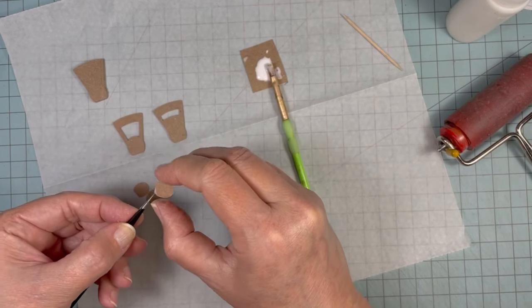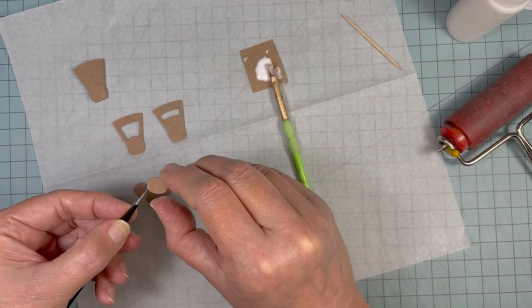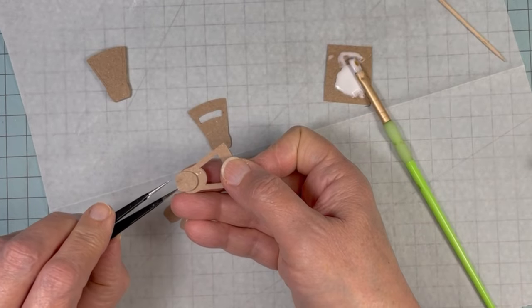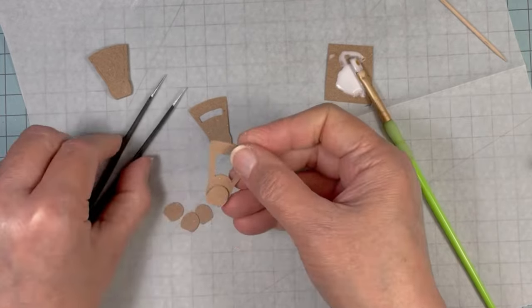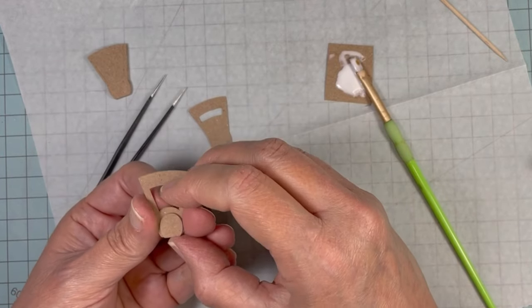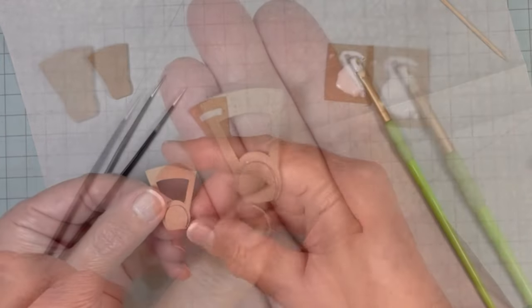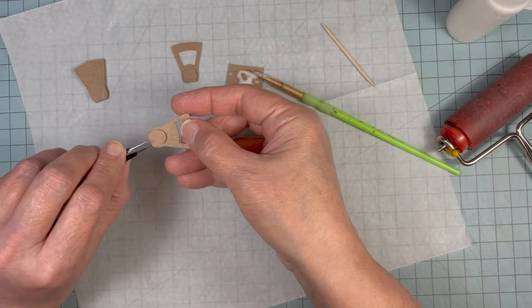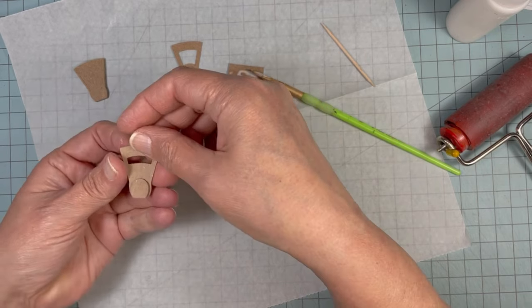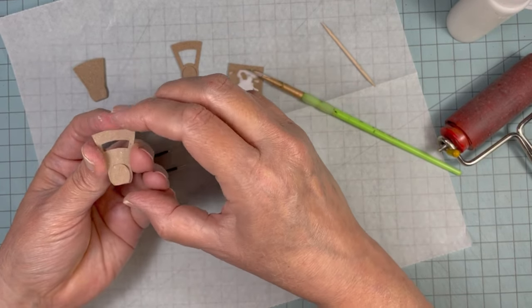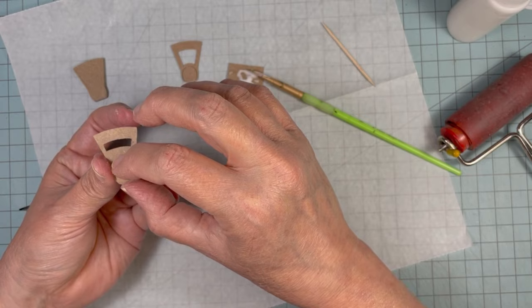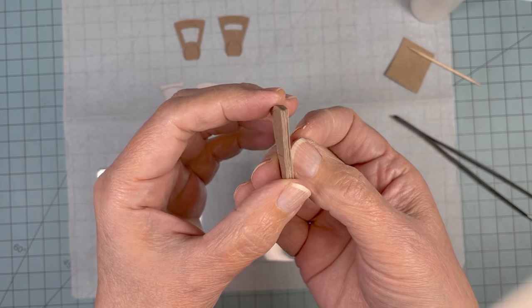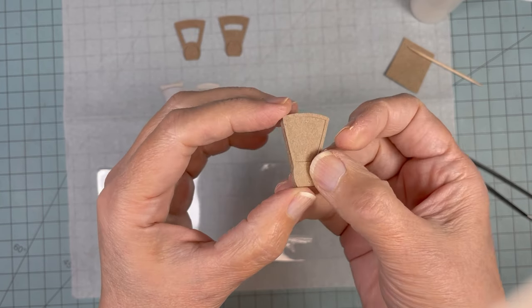I glued two layers of the decorative piece together, and then I'm going to glue it onto the front and the back of the scale. This is how the frame pieces look glued onto the base piece.